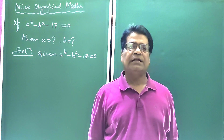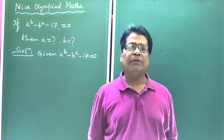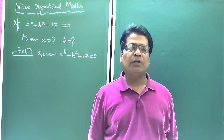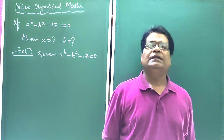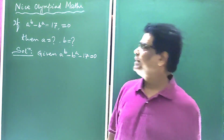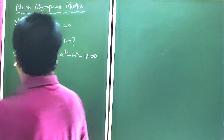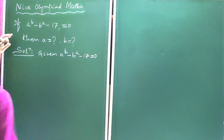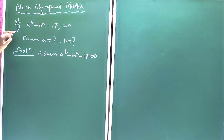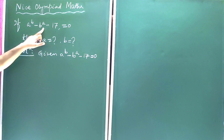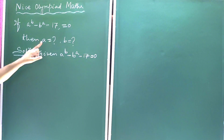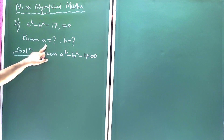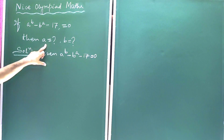Dear viewers, let us solve a very important exponential equation. The question is very important for your examination point of view. If a to the power b minus b to the power a minus 17 is equal to 0, then what is the value of a and what is the value of b?